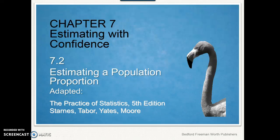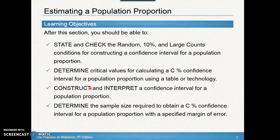Welcome to section 7.2 where we're going to specifically discuss estimating a population proportion with confidence intervals. We talked about this briefly in the last section — in order to create a confidence interval, you're going to have to check your conditions. These will be the same conditions you had to check for proportions back in unit 6.